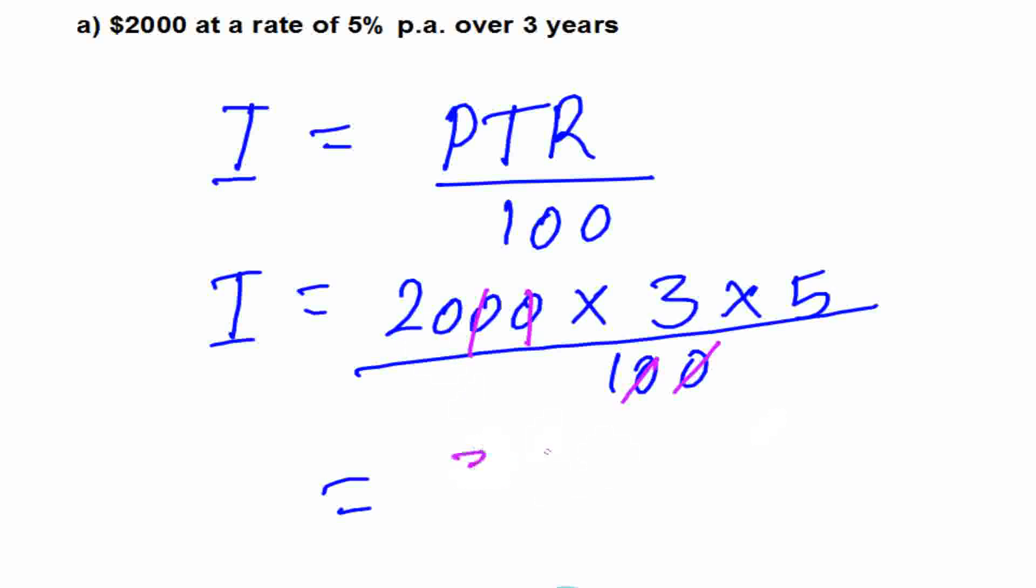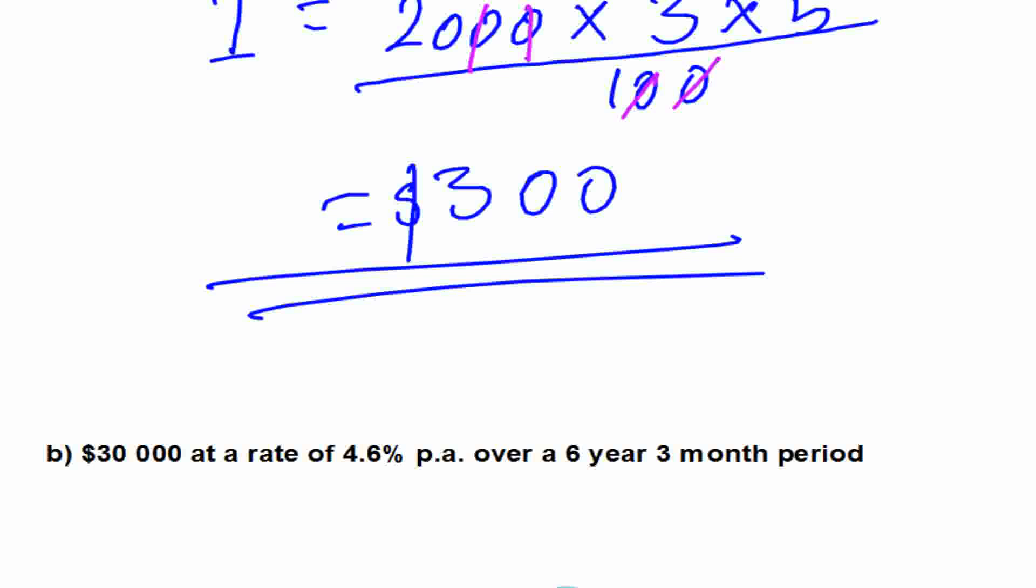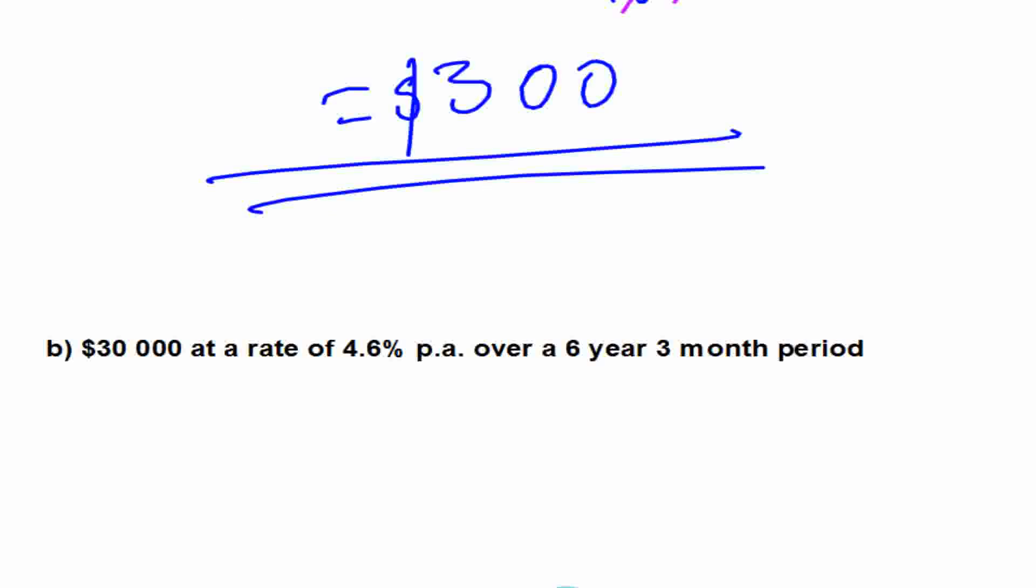So this is our answer for part A. Let's look at part B. We are calculating the simple interest if we borrow this amount. We're going to have a rate of 4.6% per annum.